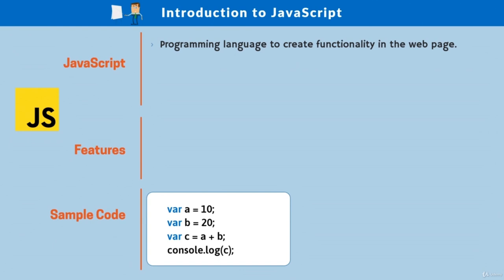Basically, JavaScript executes within browsers such as Google Chrome, Edge, Safari, Opera, and Firefox — in all modern browsers, JavaScript is supported by default. But JavaScript can also be executed on a server or any other system where a JavaScript interpreter is available. That is actually possible using Node.js, which makes it possible to execute JavaScript on a machine independently without the browser.